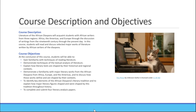Additional objectives include discussing how those works define and are shaped by their contexts, defining key elements of the African diaspora's literary tradition, explaining how major literary figures shaped and were shaped by this tradition throughout history, and completing and submitting four literary analysis papers — two short essays and two longer papers.